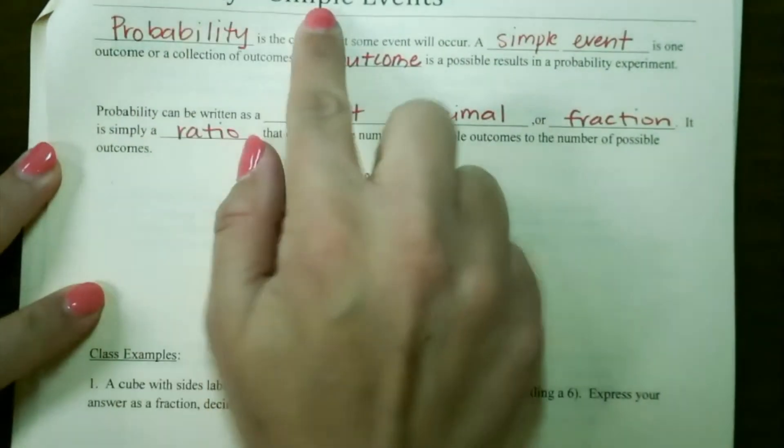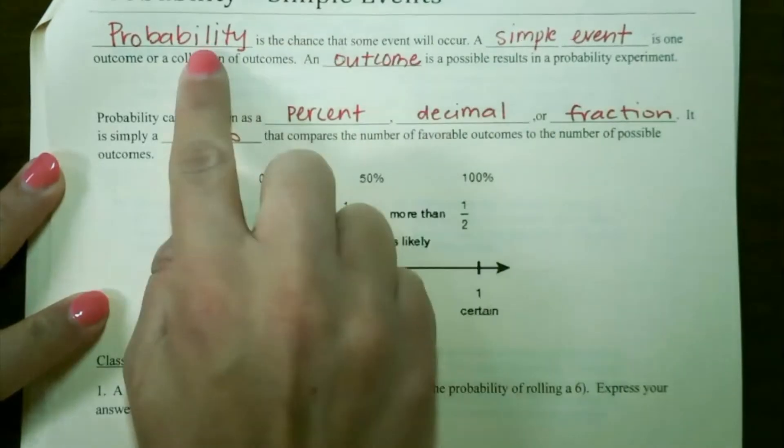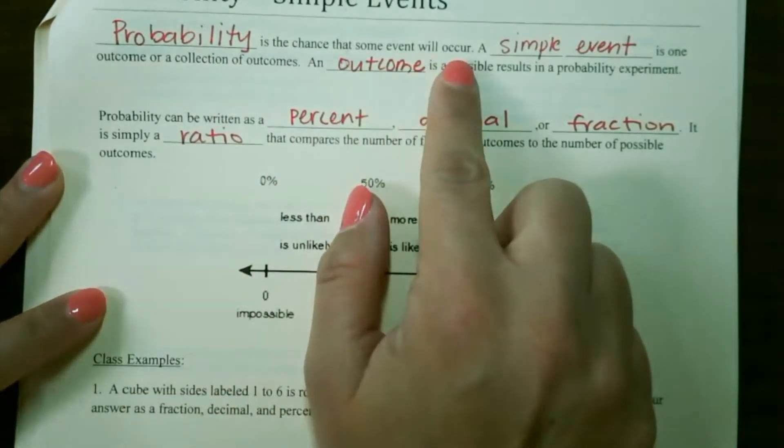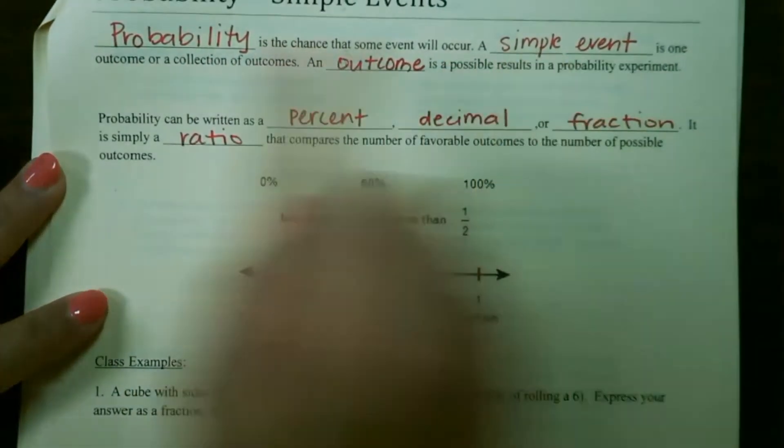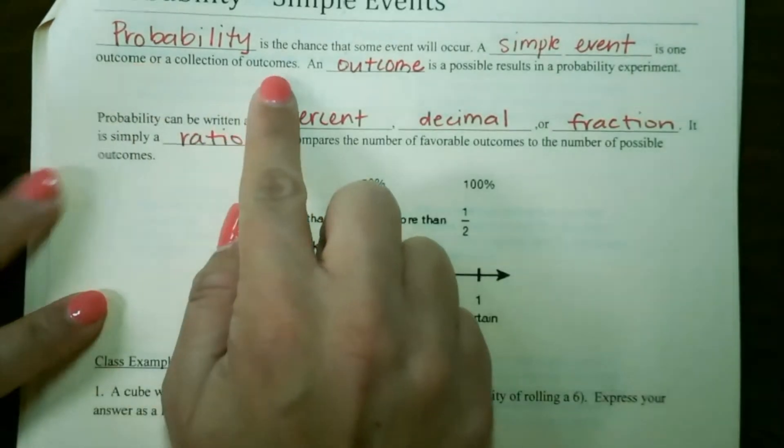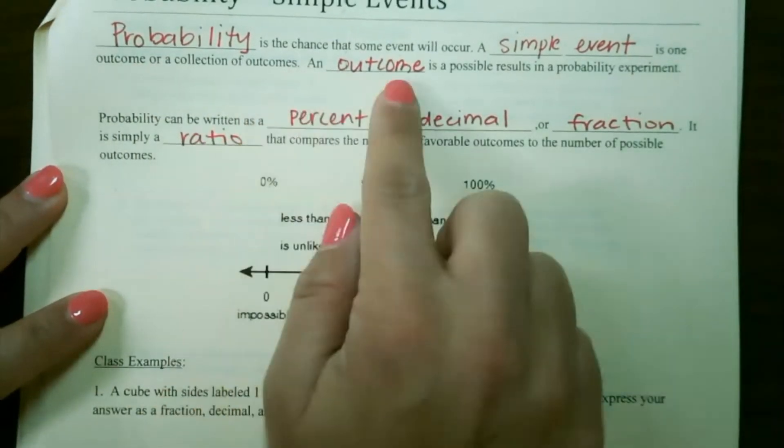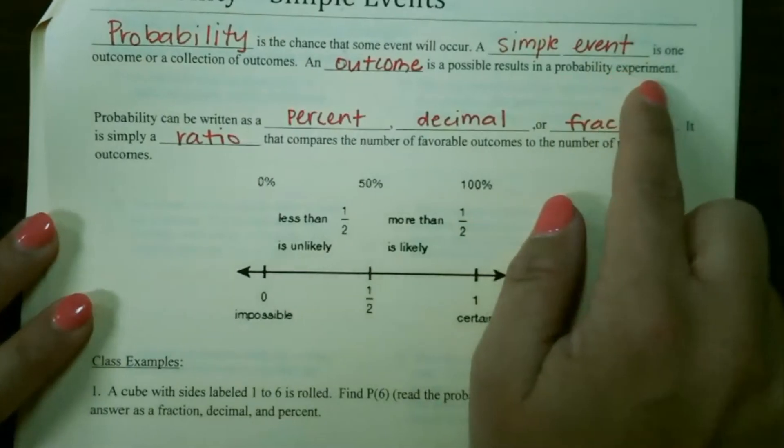Let's look at probability of simple events. Probability is the chance that some event will occur. A simple event is one outcome or a collection of outcomes. An outcome is a possible result in a probability experiment.